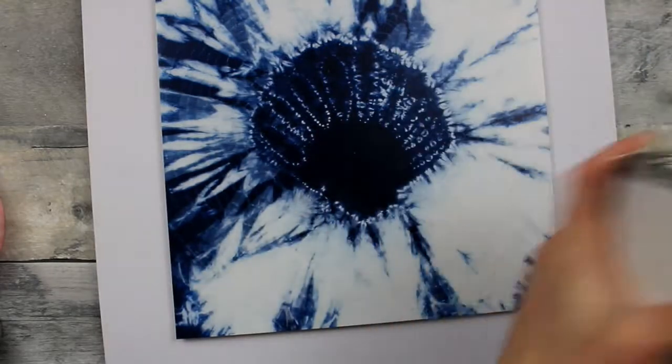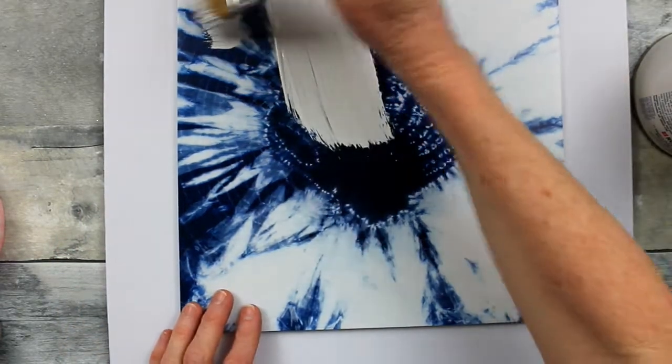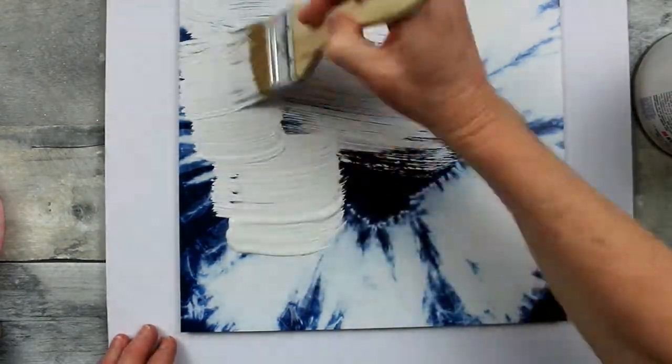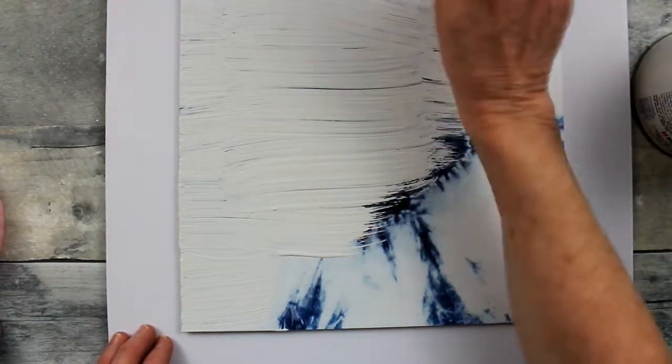You use some of this white chalk paint. It's linen white. Shake, shake, shake. And my little Dollar Tree brush. And I am going to go over this entire thing. I just give it one thick coat. And then put it in front of the fan to dry for a little while.